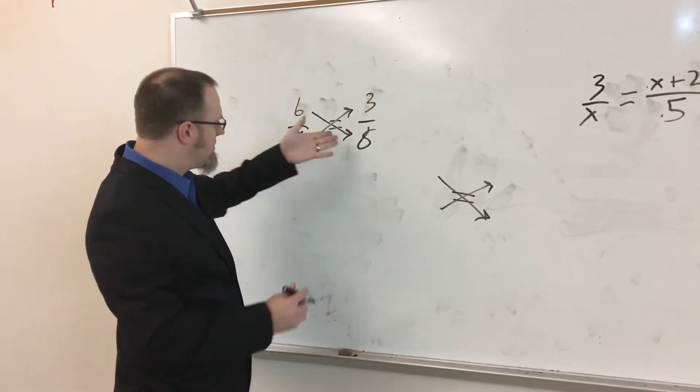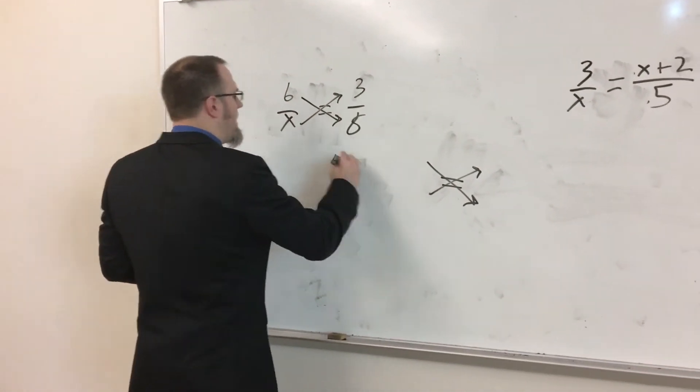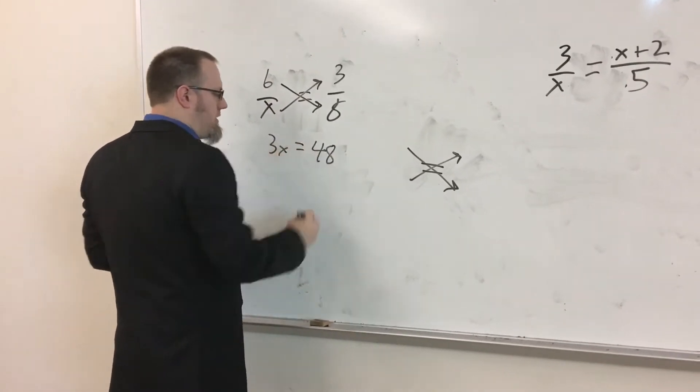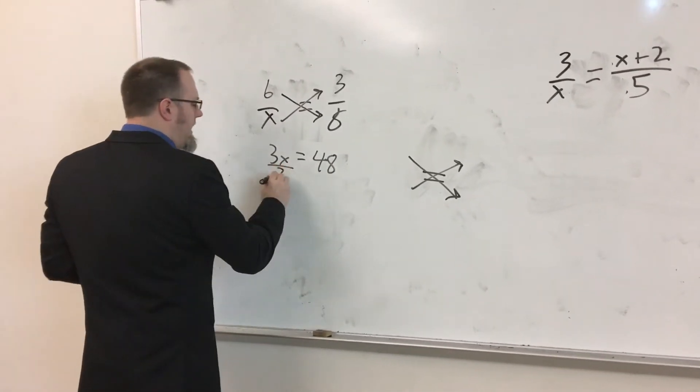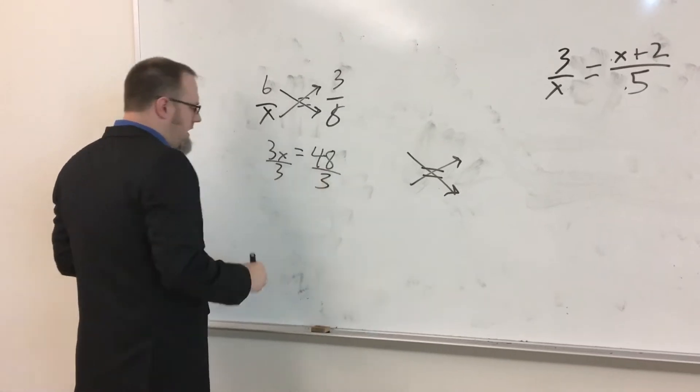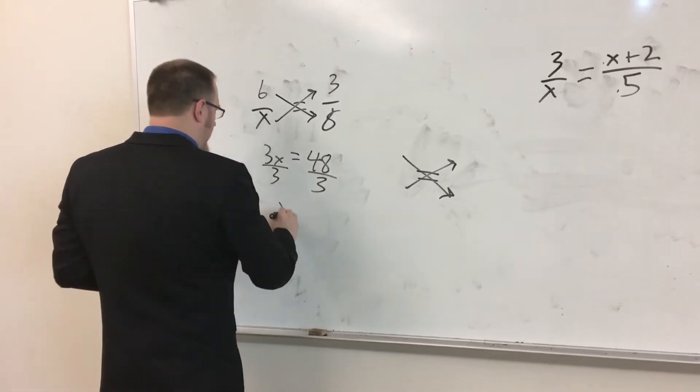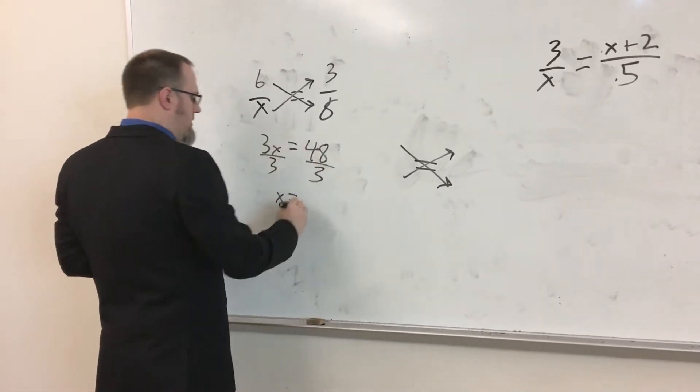So to start with, on this one, we're cross multiplying. 6 times 8 is going to give us 48. x times 3 gives us 3x. So 3x equals 48. We divide by 3, and we come up with x equals 16.